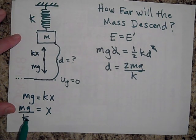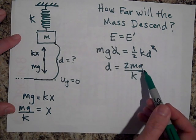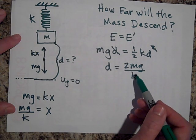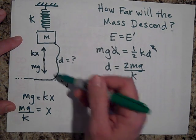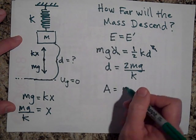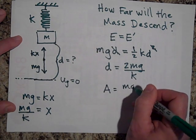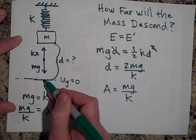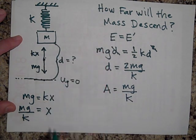And look, D is 2MG over K. So this is MG over K and this is 2MG over K, so it looks like our amplitude for this motion will just be equal to half of this, which would be MG over K. When it's down here it will be that amplitude, or that amplitude. Those are both our amplitudes.